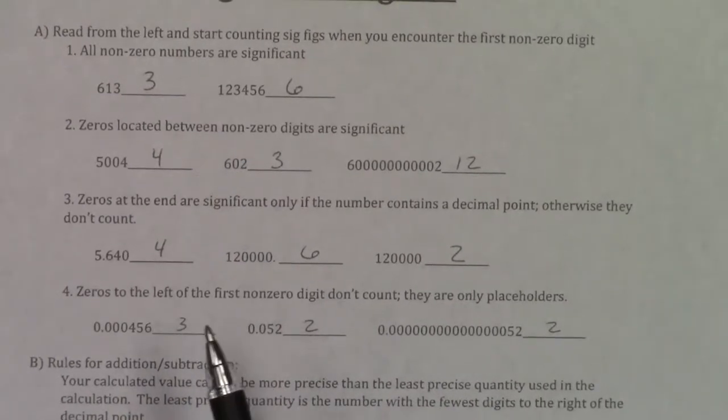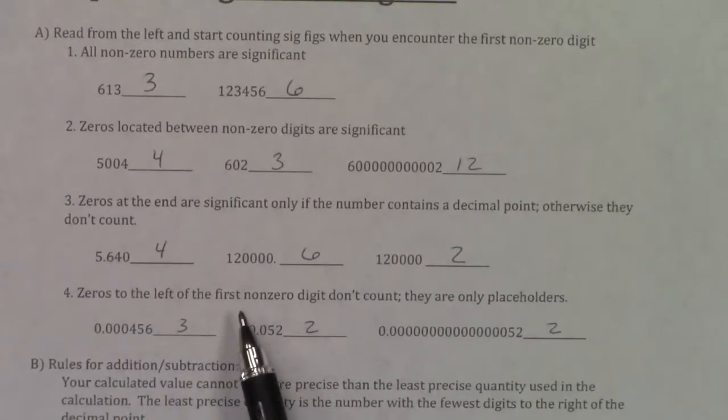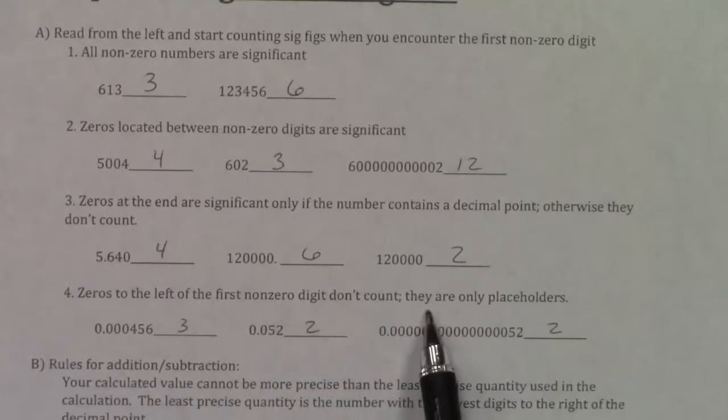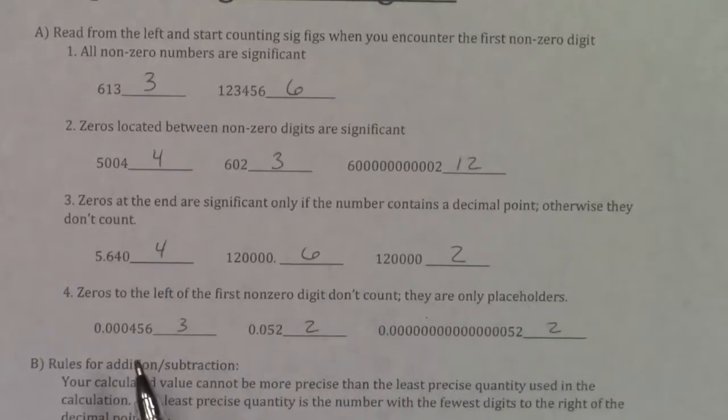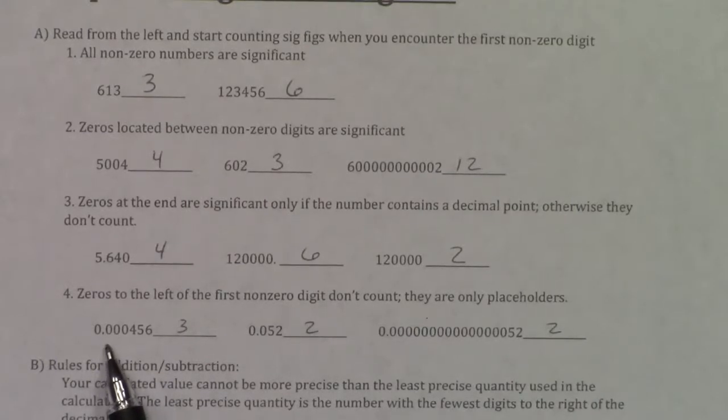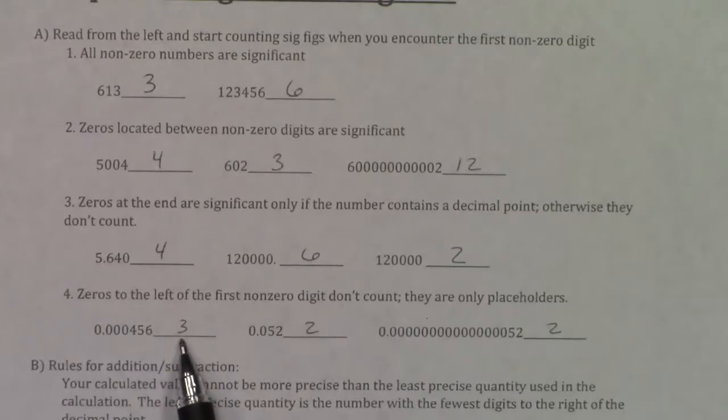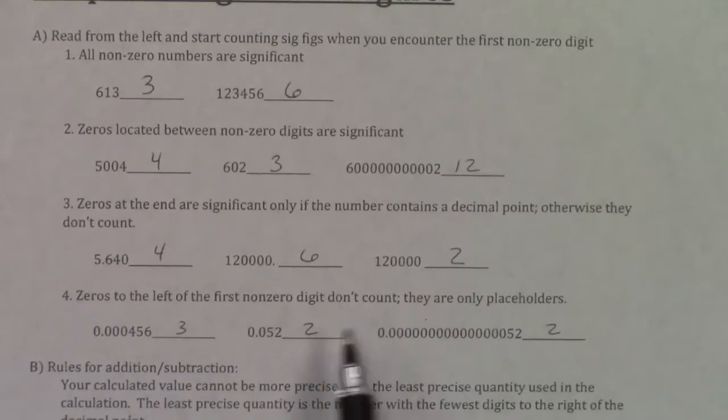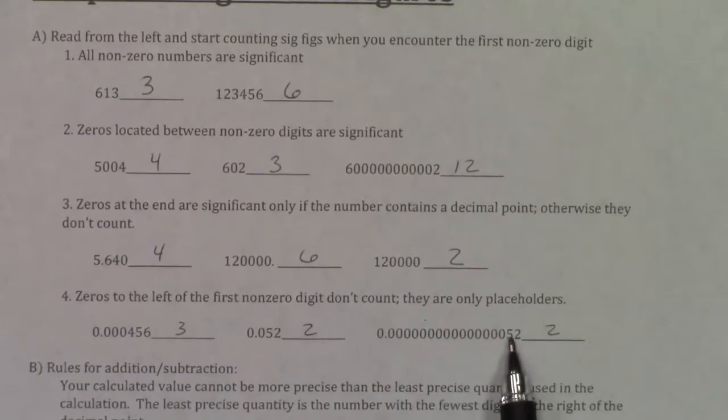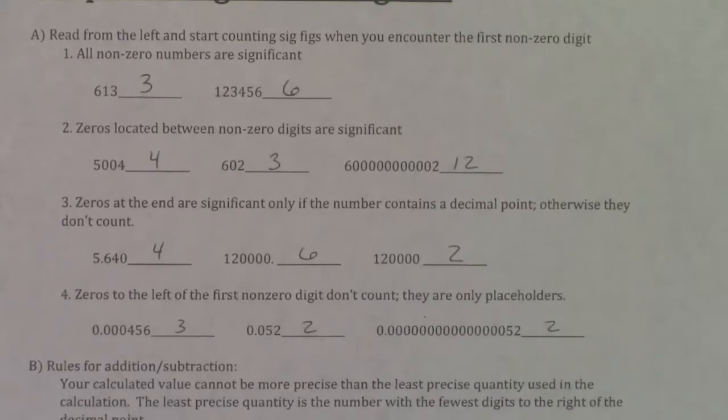If you take a look at 4, zeros to the left of the first non-zero digit don't count. They are just placeholders. All zeros to the left, regardless of your situation, will not be significant. That's why this only has 3 sig figs, this only has 2 sig figs, and even though it has all these zeros, this only has 2 sig figs.